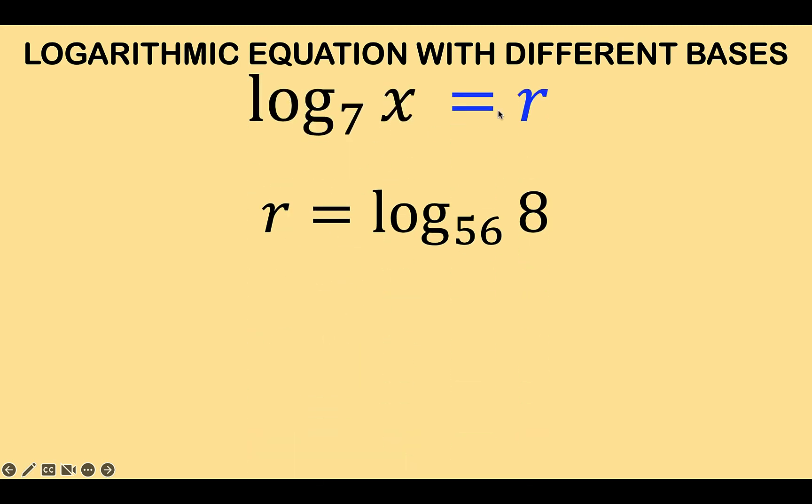But what's the value of x? Remember that we let r be equal to the logarithm to the base 7 of x. And so by transitive property if this quantity equals r and r is equal to this quantity then the log to the base 7 of x is equal to log to base 56 of 8.